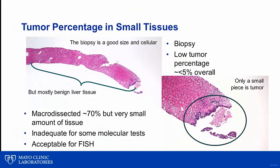With small biopsies, we frequently run into inadequate tumor percentage. The biopsy itself is actually a very good size — at least one centimeter — however, the majority of the tissue is actually benign liver with only a small area containing tumor. The overall percentage of tumor nuclei is quite low. We can try to macrodissect out an area with a much higher tumor percent, but it would be an extremely small amount of tissue, requiring many unstained sections to accumulate enough tissue for testing. So this specimen may be inadequate for some molecular techniques, but with over 100 tumor cells present, it would be acceptable for FISH.